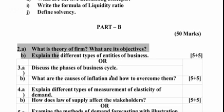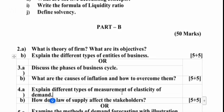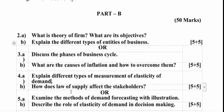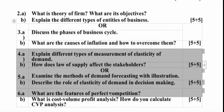The next question is from the second unit: explain the different types of measurements of elasticity of demand. I have highlighted elasticity of demand in the previous question paper — hope you have worked on it. The law of demand and law of supply are set as the topmost question and may occur this time for sure. Methods of demand forecasting and the role of elasticity of demand in decision-making are also second unit questions.